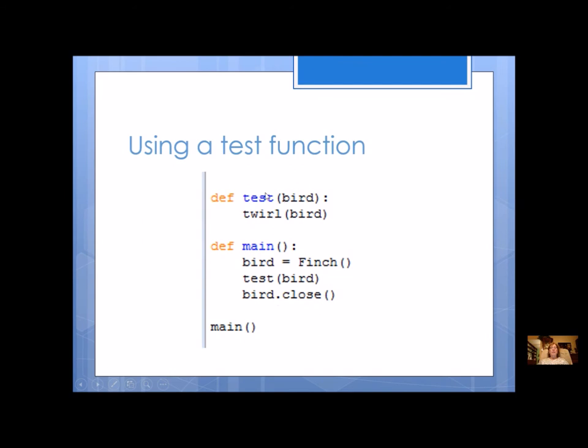So here's our example. I've got a test function. Twirl is my one function that I'm testing, and then I do the work in main, but the only thing I'm really working on right now is calling the test function.